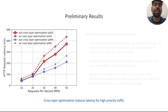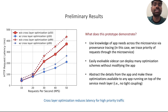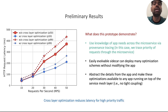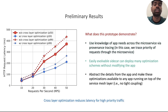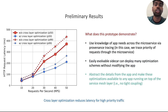So what does this prototype exactly demonstrate? First, it shows that we can use knowledge of application needs for various optimizations across the microservice using tracing — in this case, we trace the priority of requests throughout the microservice. It also shows that we can easily evolve the sidecar and deploy many optimization schemes without modifying the app. And finally, it shows how by abstracting the details from the application layer, these optimizations are made available to any app that runs on top of the service mesh layer. This shows that service meshes can be used effectively for cross-layer solutions.